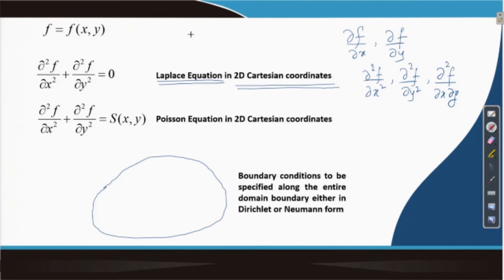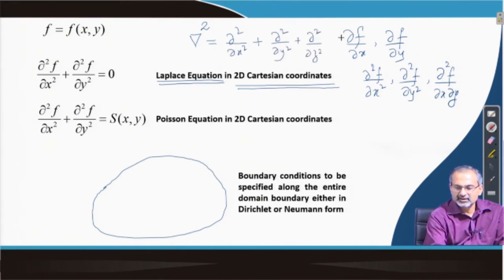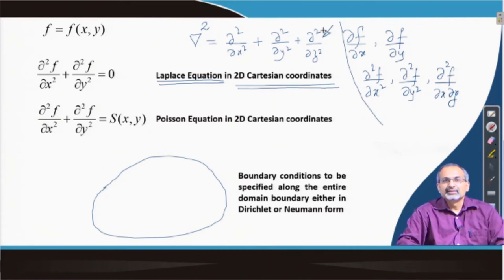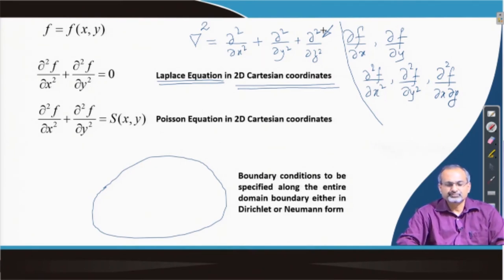The Laplacian operator del-squared in Cartesian 2D coordinates involves second order partial derivatives along x and y. In 3D coordinates, an additional third term is included, corresponding to the second order partial derivative along z. When we talk about approximate solutions of the Laplace equation, we have to replace these second order derivatives by finite difference formulae.